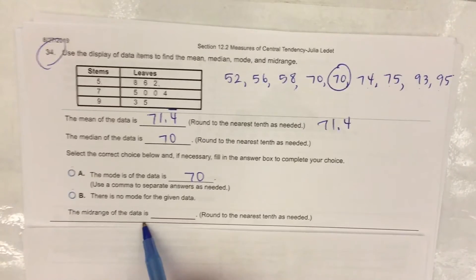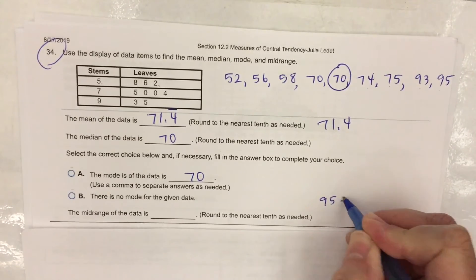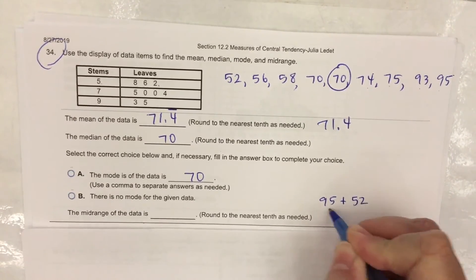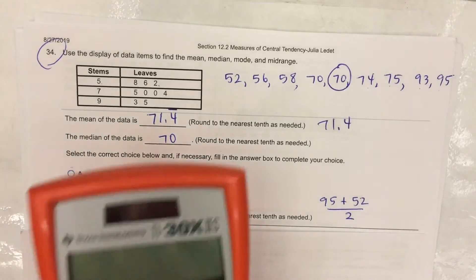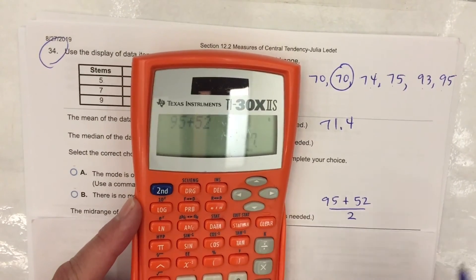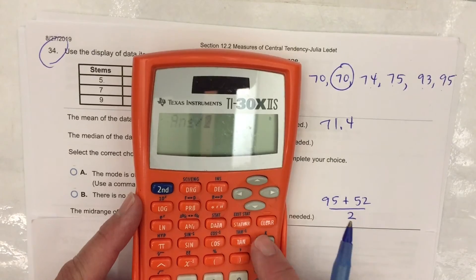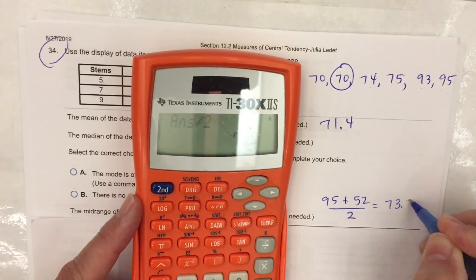The mid-range of the data set. So that's the high score, ninety five, plus the low score, fifty two, and divide by two. So ninety five plus fifty two, one forty seven divided by two is seventy three point five.